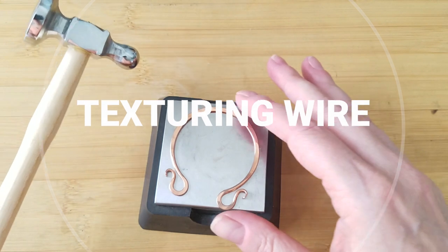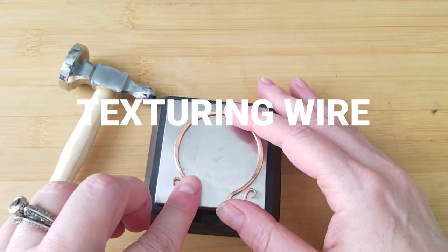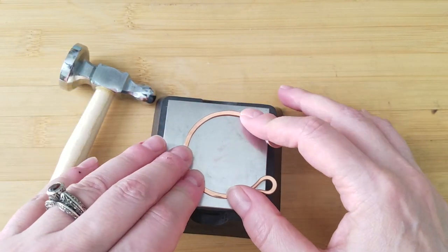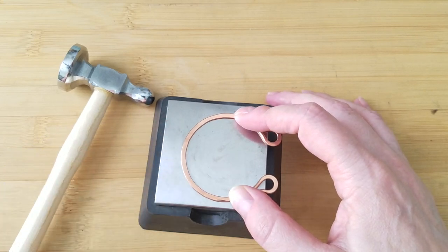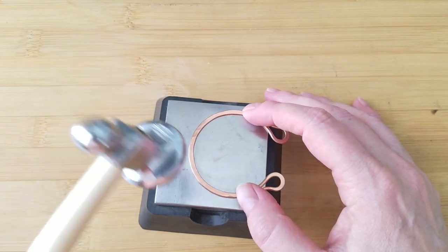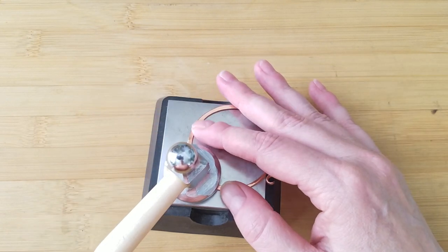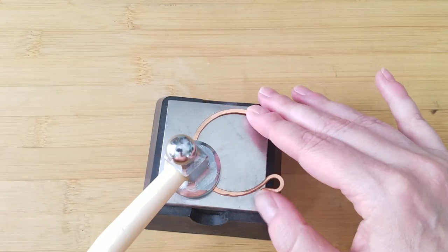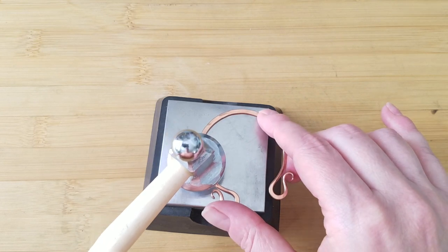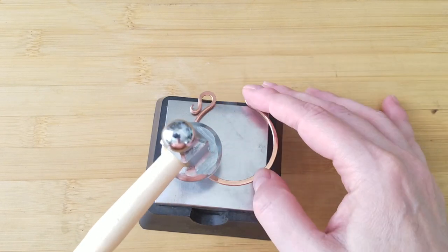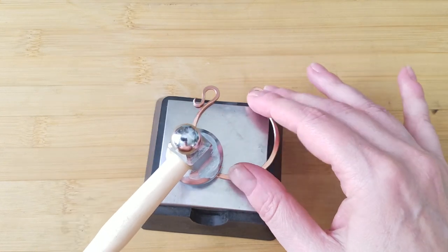Now that we've talked about how the handle works and how to feel the difference between peening and planishing, we're going to start texturing this wire.